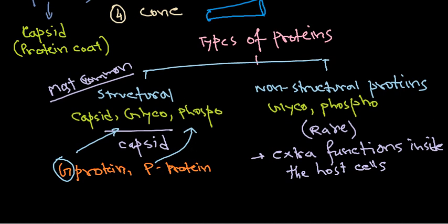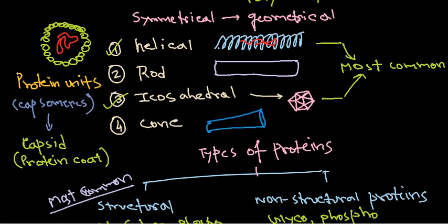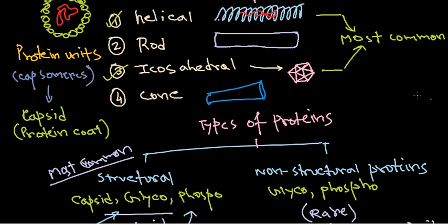These are the different types of proteins. The most important one is the structural protein because it provides the structural role to make the capsid. In the future video we will be learning about the details of the helical as well as the icosahedral capsid protein structure.